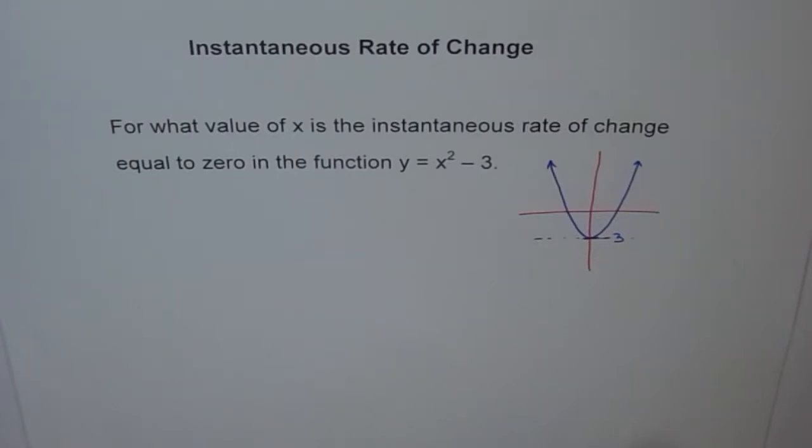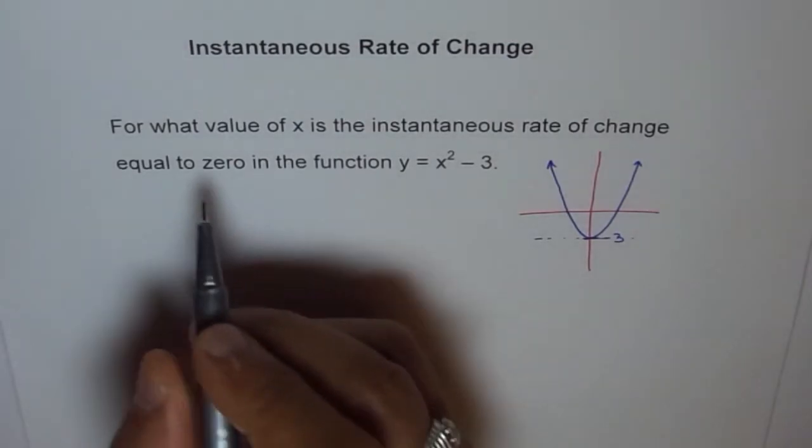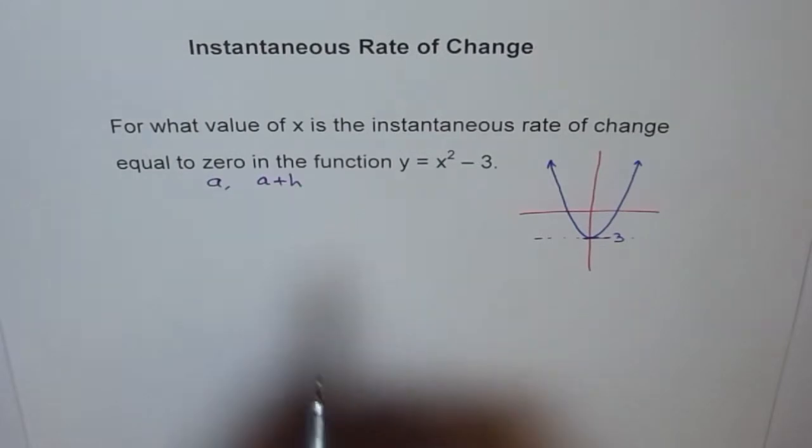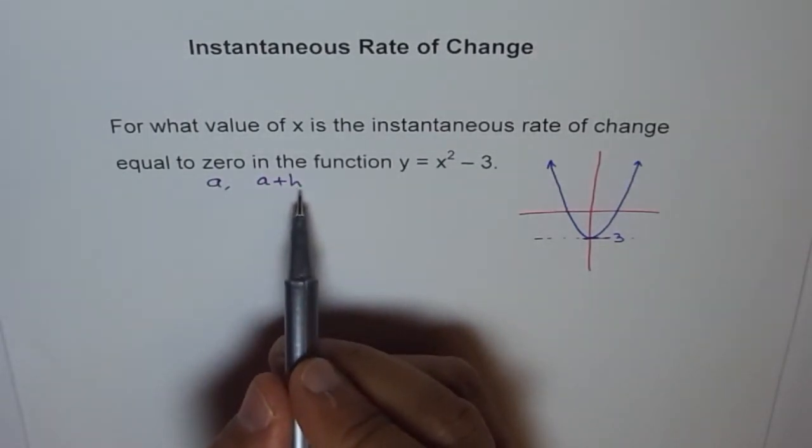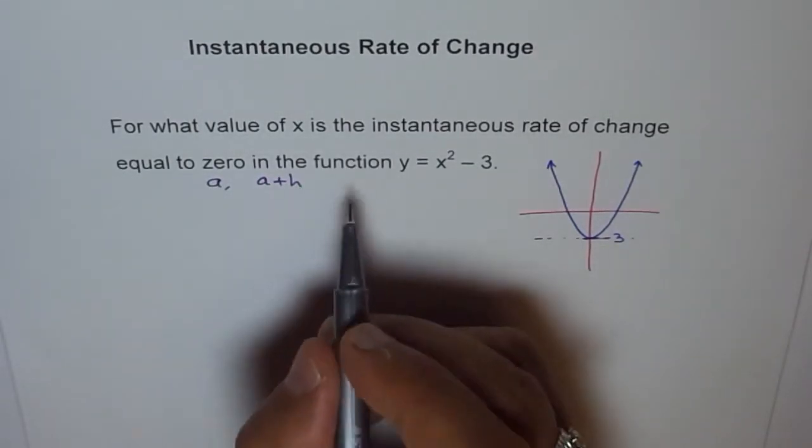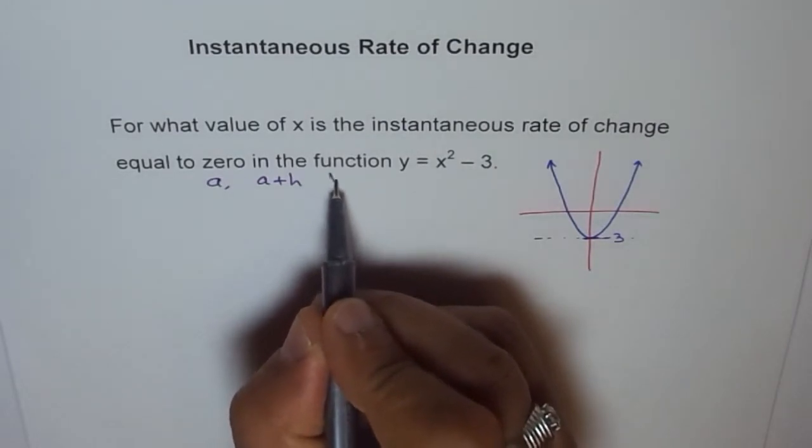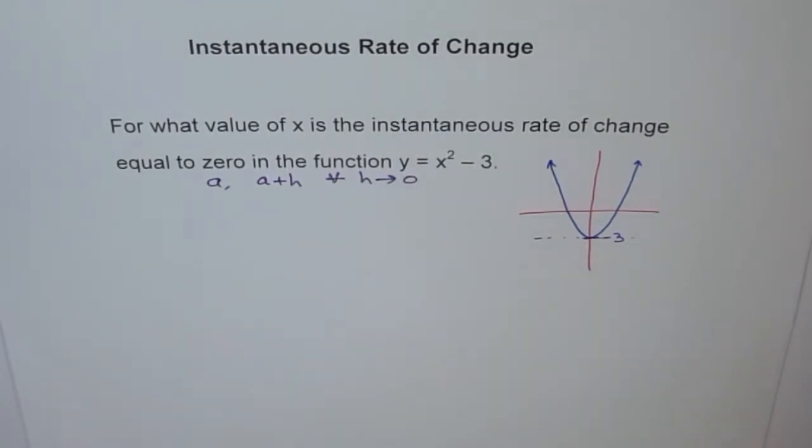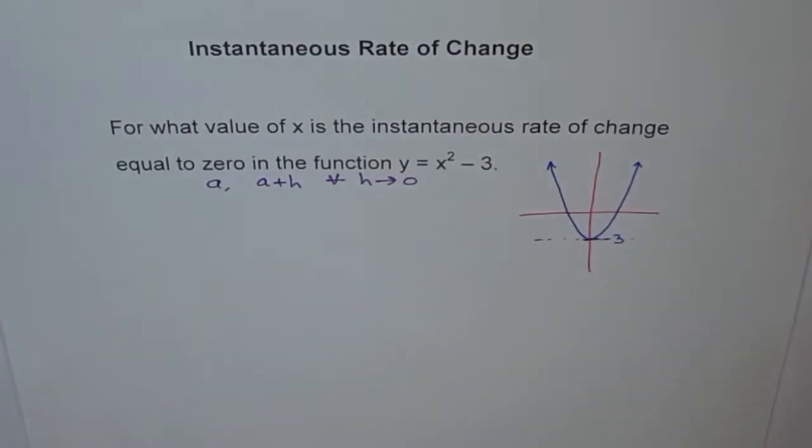Now, algebraically, if you want to find instantaneous rate of change for a particular function, then what we can assume is that we should consider two points. And let the two points be, let's say one at point A, and the other one as A plus H, where H is a very, very small quantity, where H is approaching kind of 0. So it's very close to the point A.